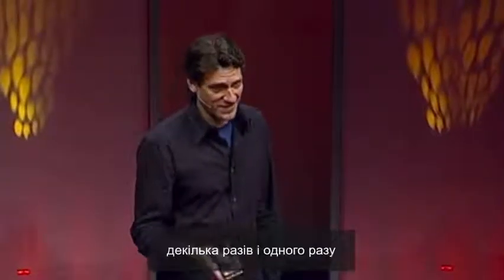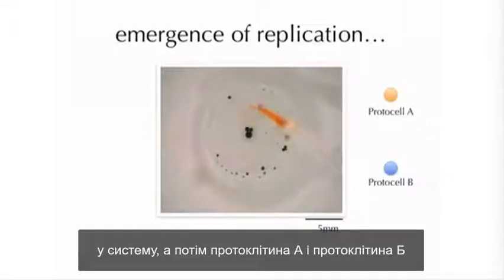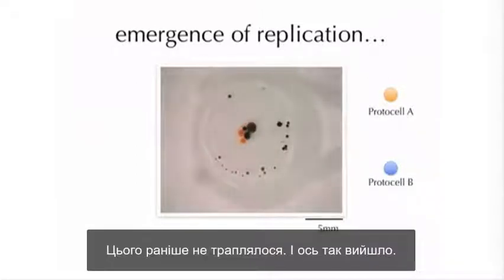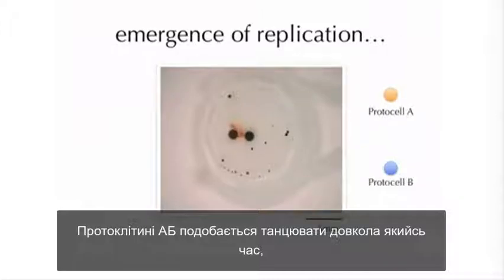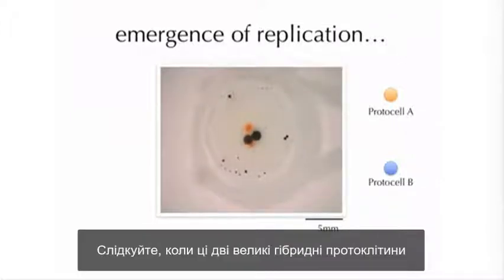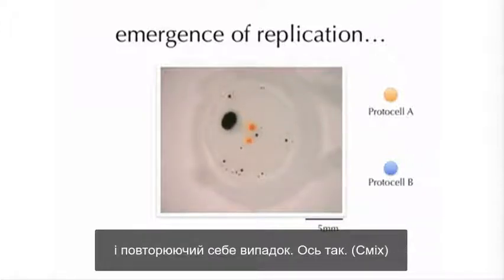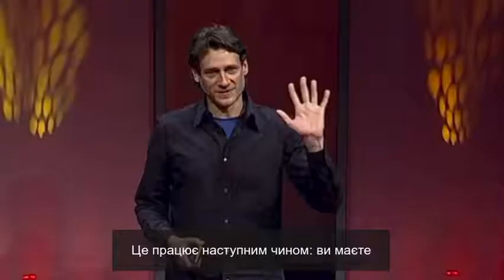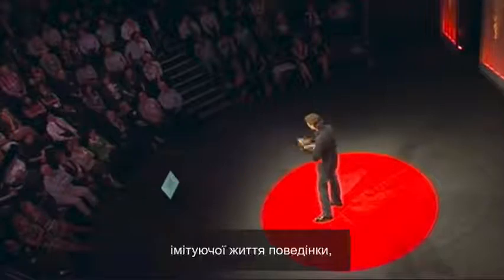I repeated this experiment a number of times, and one time something very interesting happened. Protocell A and protocell B fused together to form a hybrid protocell AB — something that didn't happen before. Protocell AB dances around for a bit. Then something even more interesting happens: when two large hybrid protocells fuse together, we get a dancing protocell and a self-replication event — just with blobs of chemicals. A simple system with five chemicals hybridizes with another simple five-chemical system, forming something more complex than before, and you get the emergence of another lifelike behavior: replication.